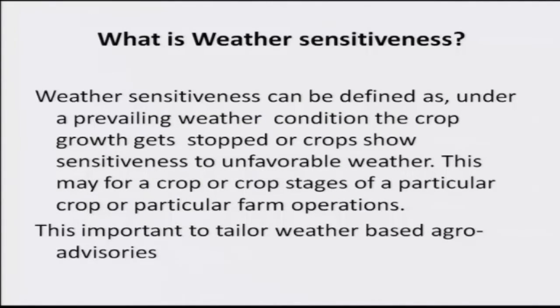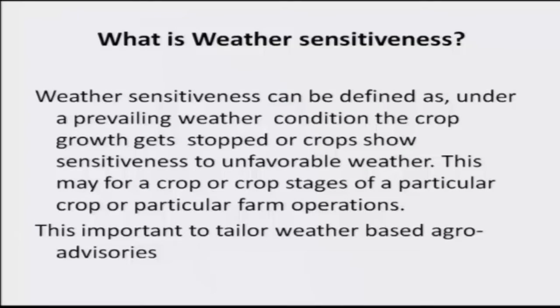What is weather sensitiveness? Weather sensitiveness can be defined as: under a prevailing weather condition, the crop growth gets completely stopped. When we were discussing about the cardinal temperature, the minimum temperature required for barley and oats is around 3 degrees centigrade. Suppose the temperature is 1 degree or 0 degree, the crop does not germinate. So, weather sensitiveness means under a prevailing weather condition, the crop growth gets stopped or crops show sensitiveness to unfavorable weather.